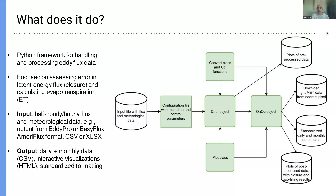This flowchart shows how the code works. The input flux data is read in with a configuration file that the user writes — it's not too difficult. It tells the code where the weather data and flux data are, and what the variable names are. Then automatic conversions occur in the data object, and plots can be created from the initial or aggregated data using the QA/QC object.